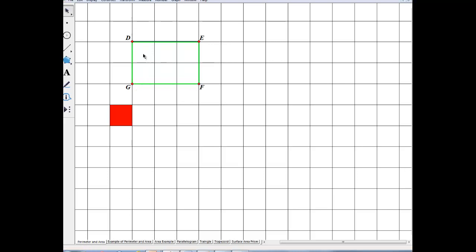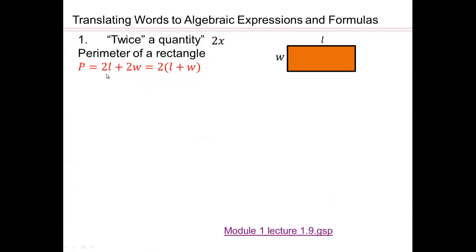So that will give you your perimeter. So it's going to be length plus length, width plus width. So 2 lengths plus 2 widths or 2 times length plus width is the perimeter of a rectangle. So you can see where twice the quantity comes into play. Twice the length plus twice the width added together gives you perimeter of a rectangle.